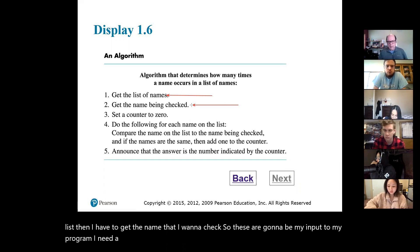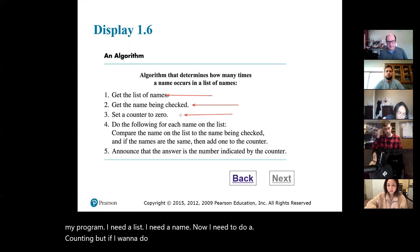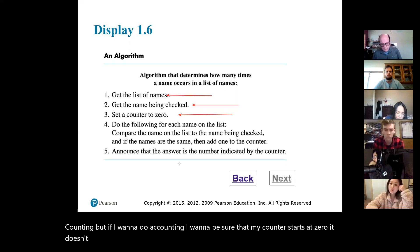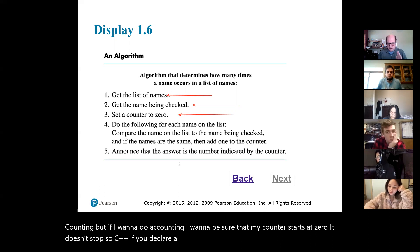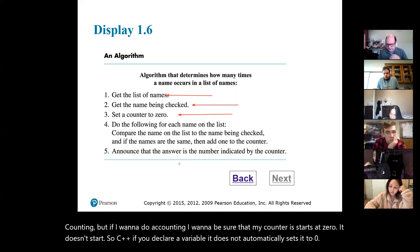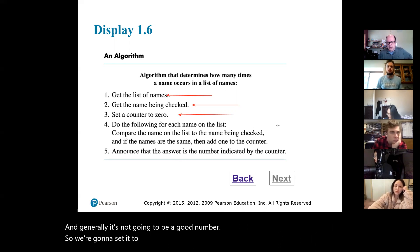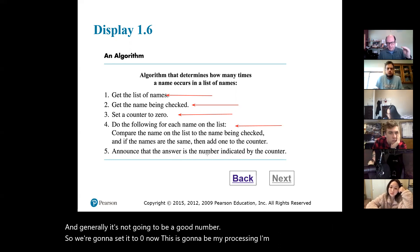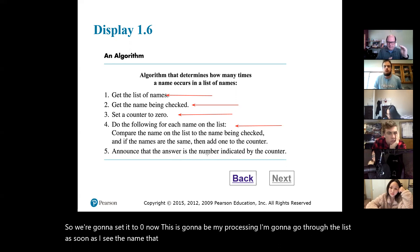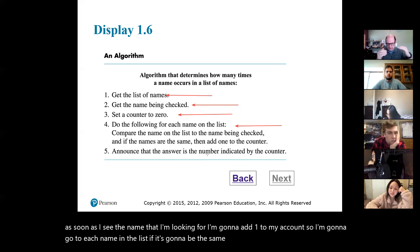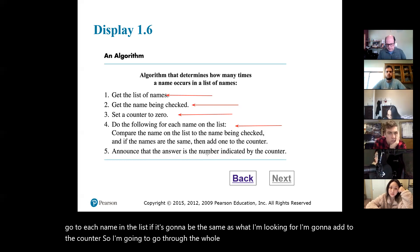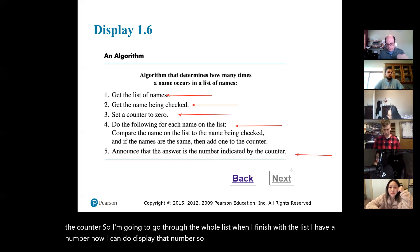Now I need to do a counting. If I want to do counting, I want to be sure my counter starts at zero. In C++, if you declare a variable it does not automatically set it to zero — it just picks up whatever is in memory, and generally it's not going to be a good number. So we set it to zero. Now for my processing, I go through the list. As soon as I see the name I'm looking for, I add one to my counter. When I finish going through the whole list, I have a number, and then I can display that number. This is called an algorithm.